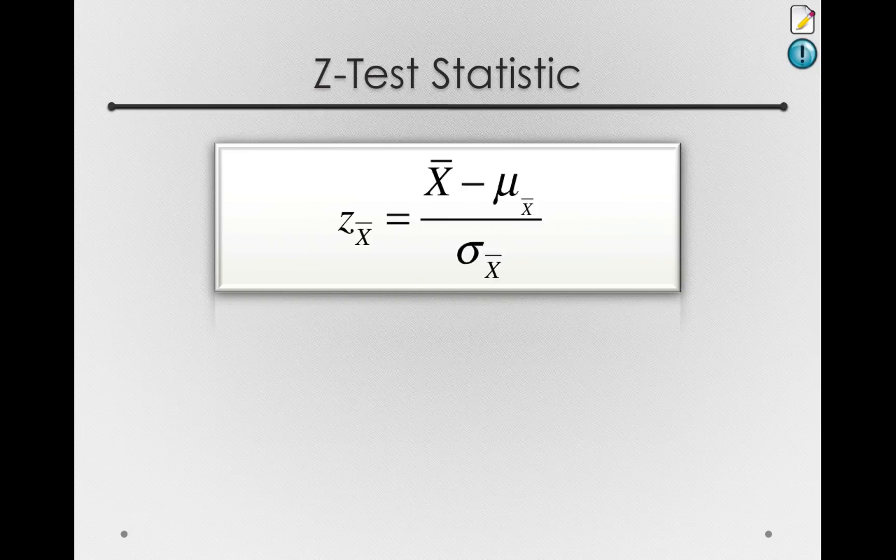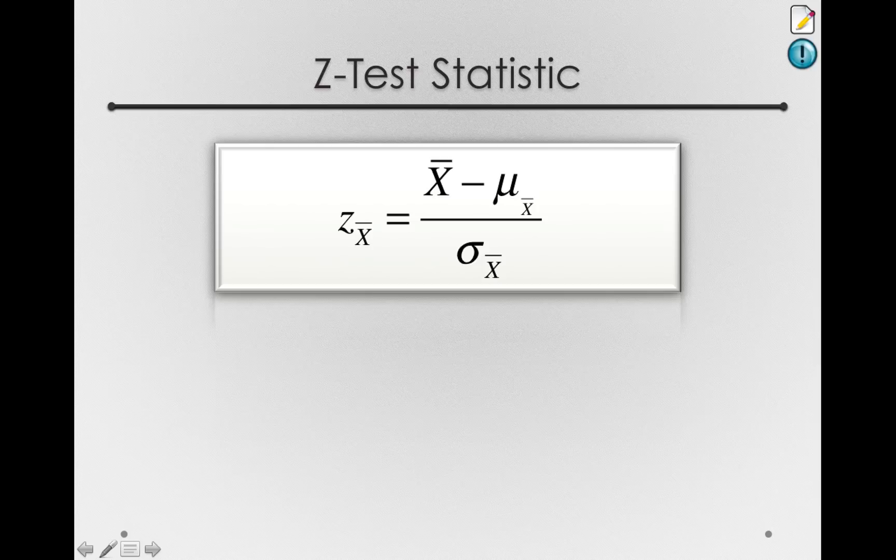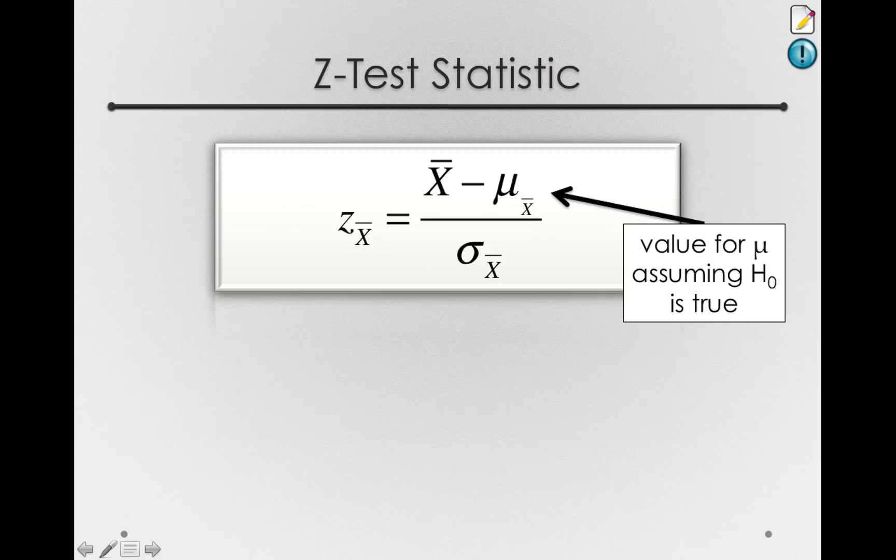And notice what the z-test is characterizing. We are finding the deviation between our observed sample mean and the mean of a sampling distribution, assuming the null hypothesis is true. And we're dividing that by the standard error, the standard deviation of the sampling distribution of sample means.